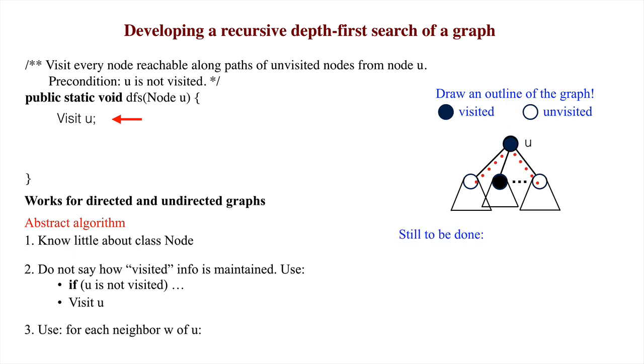But now, the unvisited neighbors of U are no longer reachable on an unvisited path starting at U. So, for each neighbor W of U, we now have to visit all nodes reachable along paths of unvisited nodes from W.